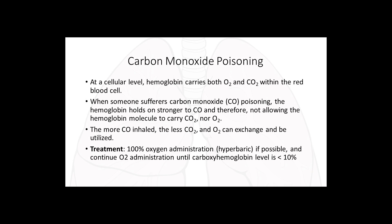Carbon monoxide at a cellular level is similar to CO2 in that the more CO that is inhaled, the less CO2 and oxygen that can be exchanged and utilized in those alveolar sacs. Treatment for carbon monoxide poisoning is 100% oxygen administration and hyperbaric oxygen if possible, continuing O2 until the carboxyhemoglobin level is less than 10%. Note that the pulse oximetry O2 saturation monitor will read a normal level because it reads carbon monoxide on the hemoglobin rather than oxygen — so do not rely solely on the O2 sat.